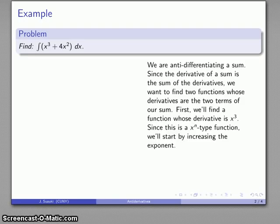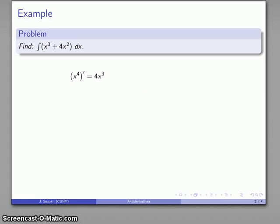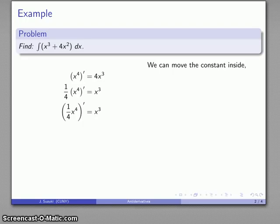So let's start off with x to the third. X to the third is an x to the n type function, so I might start by looking at the derivative of x to the fourth, which gives me 4x to the third — close but not quite. If I multiply by one-fourth on both sides, that gets me x cubed, and since a constant times a derivative is the same as the derivative of the constant times the function, the antiderivative of x cubed is one-fourth x to the fourth.